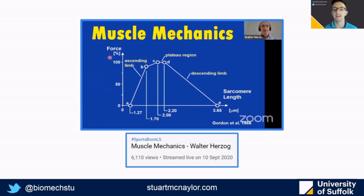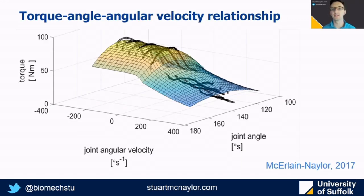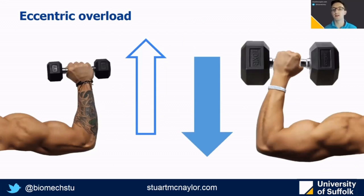For more on muscle mechanics I strongly recommend a video lecture by Walter Herzog done as part of the sports biomechanics lecture series. To put the force-length and force-velocity relationships into context: regardless of joint angle, torque is always greater in eccentric contractions than during concentric contractions. Practically, if I were capable of lifting 100 kilograms concentrically I could probably lower around 140 kilograms eccentrically — meaning the eccentric phase of most resistance training is almost always submaximal.